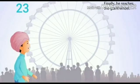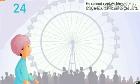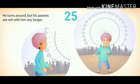Finally he reaches the giant wheel, and his eyes shine as it keeps turning with its brightly colored lights and people laughing and shouting. Now he cannot contain himself. He slowly says, 'I want to go on the roundabout.' But as soon as he turns around to look at his parents for permission, he finds that they are not with him any longer. This is the end of Part 1.